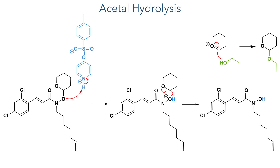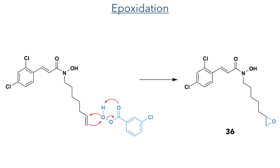To remove the THP protecting group, they reacted with PTSA in ethanol. This protonates the acetal and promotes elimination of the N-hydroxyl group; the oxonium formed then reacts with ethanol, which was used as solvent. In the final step, they installed an epoxide using MCPBA. This undergoes concerted addition to the alkene, where the alkene abstracts an oxygen atom from the peroxide, which eliminates meta-chlorobenzoic acid together with production of the target compound.